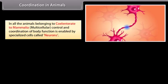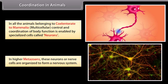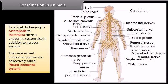In all animals belonging from coelenterates to mammalia, multicellular control and coordination of body functions is enabled by specialized cells called neurons. In higher metazoans, these neurons or nerve cells are organized to form a nervous system. In animals belonging from arthropoda to mammalia, there is also an endocrine system in addition to the nervous system. The nervous and endocrine systems are collectively called the neuroendocrine system.